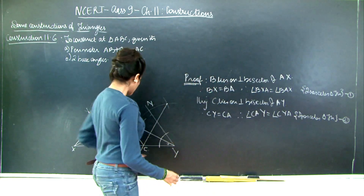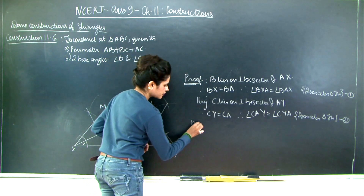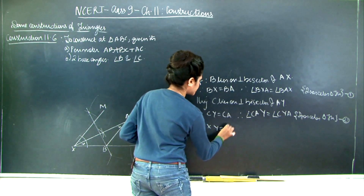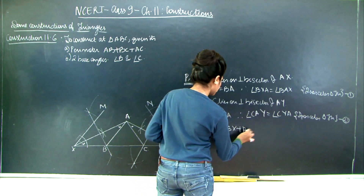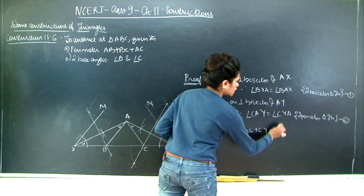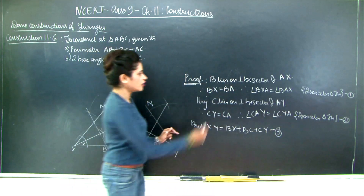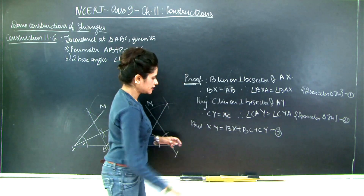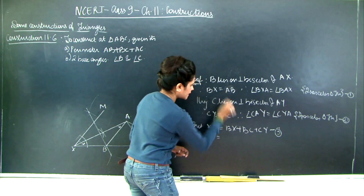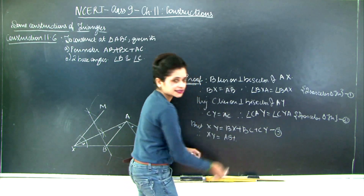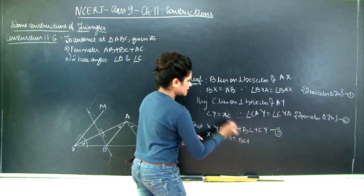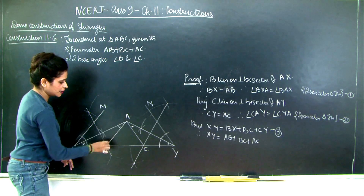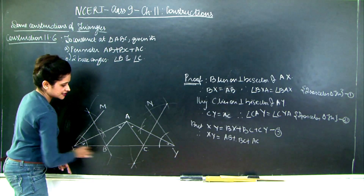XY is made up of XB plus BC plus CY. From equations 1 and 2, instead of BX we can write BA, and CY is the same as AC. So XY equals AB plus BC plus AC. Therefore the perimeter is XY, which is the length we originally took — the perimeter is justified.